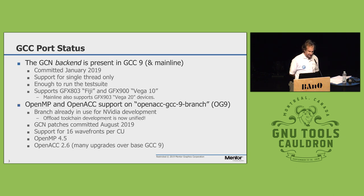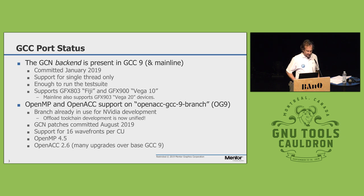GCC needs a backend to generate code, and that backend is present in GCC 9 already, committed in January 2019. It supports a single thread only, but that's just for running the GCC test suite to make sure the general infrastructure works. It supports the Fiji and Vega 10 GPUs. That's in the GCC 9 branch; mainline also supports Vega 20 devices.